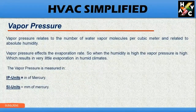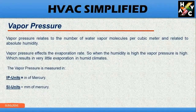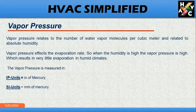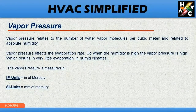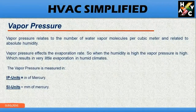Vapour pressure relates to the number of water vapor molecules per cubic meter and is related to absolute humidity. Vapour pressure affects evaporation rates — when humidity is high, vapour pressure is high, resulting in very little evaporation in humid climates. Vapour pressure is measured in IP units in inches of mercury, and in SI units in millimetres of mercury.